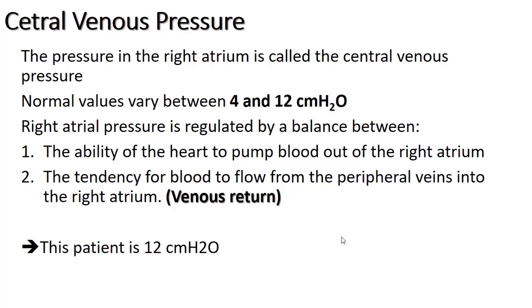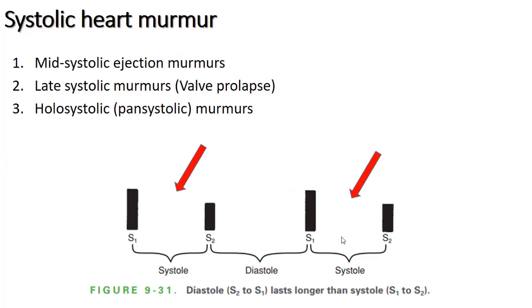Có 2 yếu tố ảnh hưởng đến áp lực tĩnh mạch trung tâm: thứ nhất là khả năng tống máu của cơ tim, thứ hai là lượng máu trở về tim. Ở bệnh nhân này đo được khoảng 12 cm nước. Với tình trạng bệnh nhân 56 tuổi sau nhồi máu cơ tim có sốc tim, con số này cho thấy bệnh nhân đang rơi vào tình trạng tim giảm khả năng co bóp.